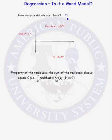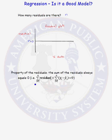So there are n residuals. The residual plot is just the x data along the x-axis and the corresponding residual along the y-axis. This is your residual equals zero line. One of the properties of the residuals is that the sum of the residuals always equals zero. So if we sum from i equals one to n over all of the residuals — which is just the sum of the observed y data minus the fitted data — that will always equal zero.